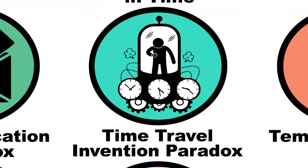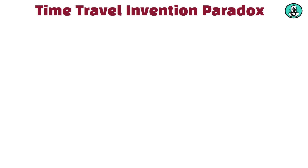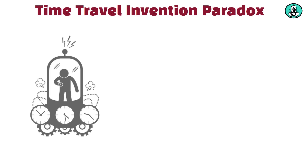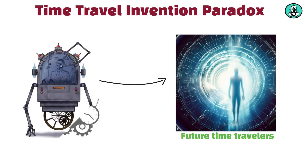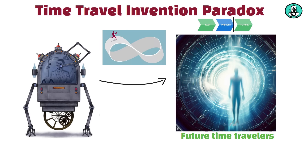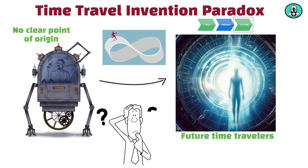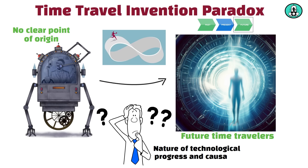The time travel invention paradox occurs when the invention of time travel itself is dependent on future time travelers. For example, if the key to creating a time machine is brought back from the future, it creates a loop where the invention has no clear point of origin. This paradox questions the nature of technological progress and causality.